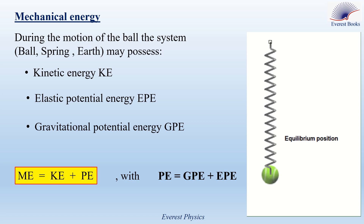So, ME is the mechanical energy equal to KE, the kinetic energy, plus PE, the potential energy. Note that, in general, PE refers to all types of potential energy in the system, such as magnetic, electric, gravitational, elastic, etc. But in our curriculum, we focus on gravitational potential energy and elastic potential energy as the two types of potential energy in the system.